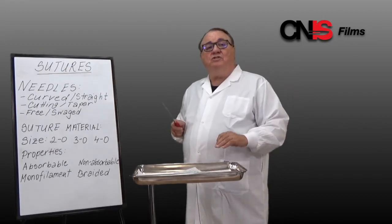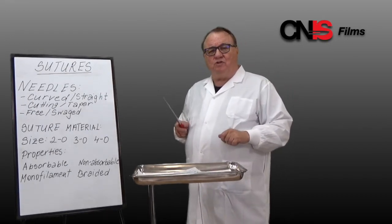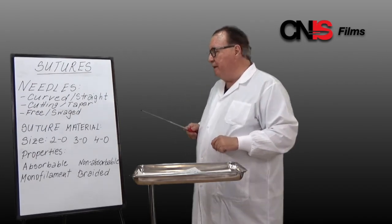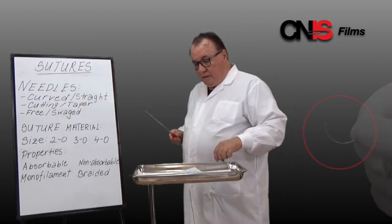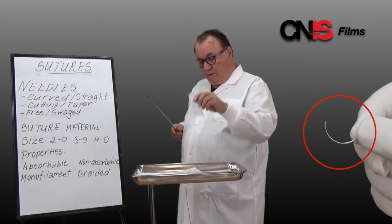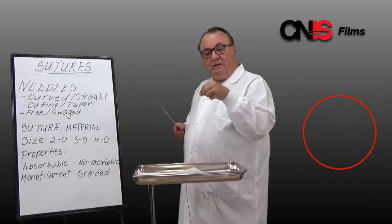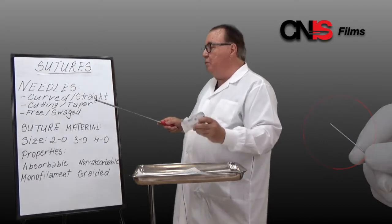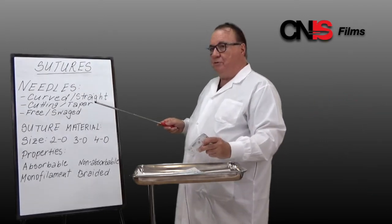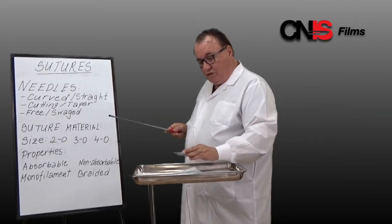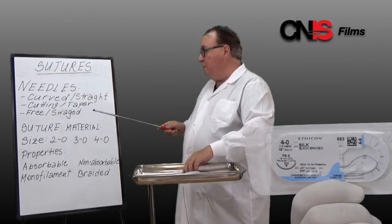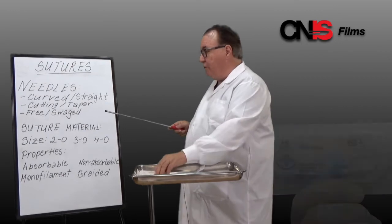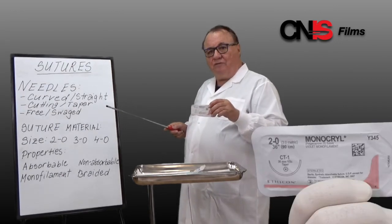There are thousands of types of sutures but we are going to focus on ones that are useful in minor surgery. Needles can be curved or straight — the curved needle is the most common one we use. Needles can also be cutting, which is good for going through tough tissue, or taper, which is good for going through softer tissue.